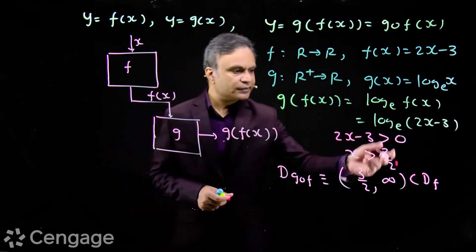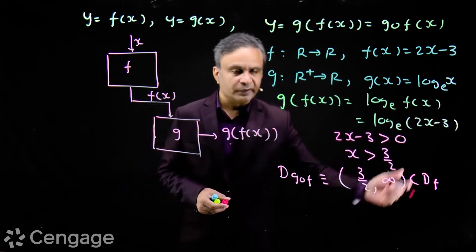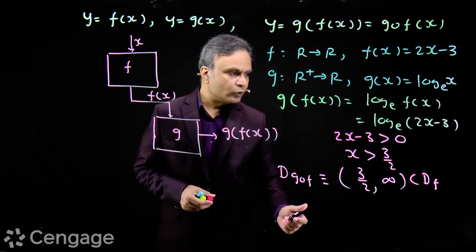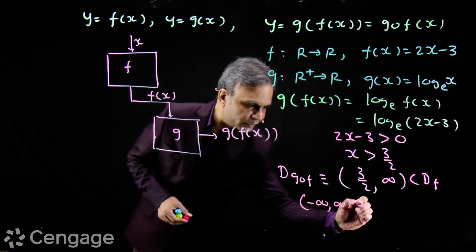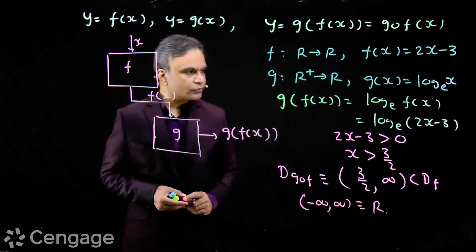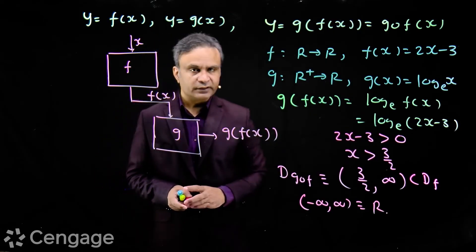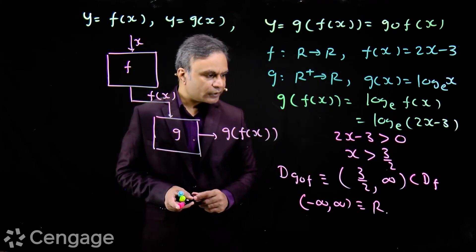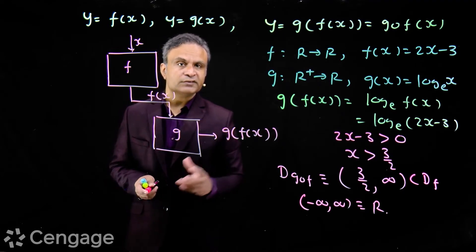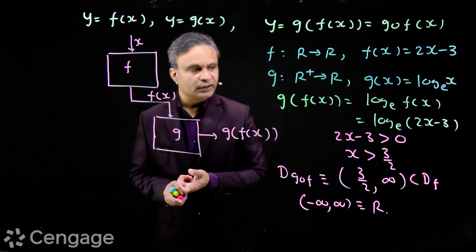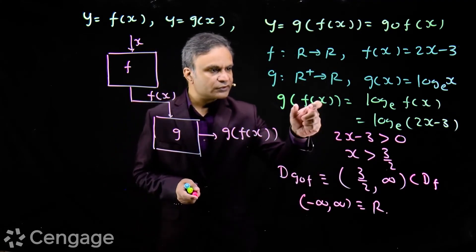In the previous example, the domains of g(f(x)) and f were the same, but here the domain of g(f(x)) is a proper subset of the domain of f, because not all output values of f(x) are acceptable to g(x) — only those values for which f(x) is positive are acceptable. The range of g(f(x)) here will be (−∞, +∞) = R, which is the same as the range of function g(x).